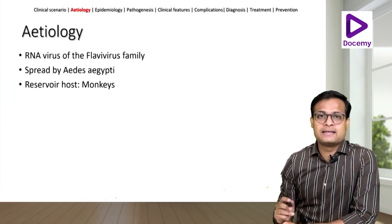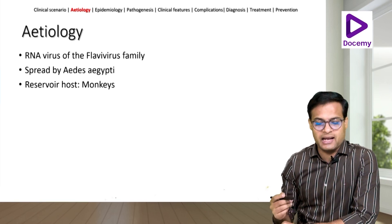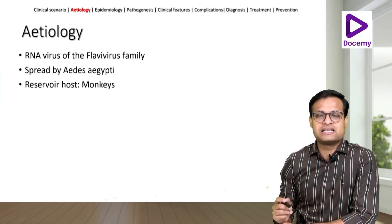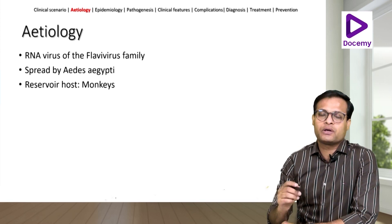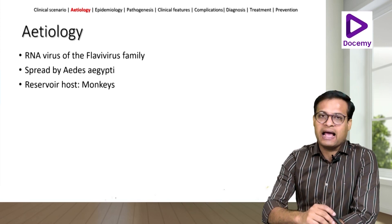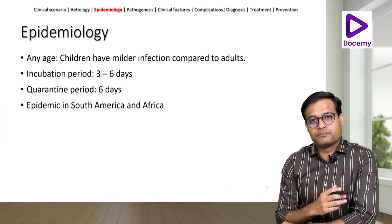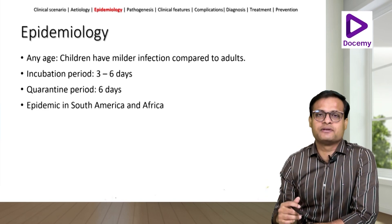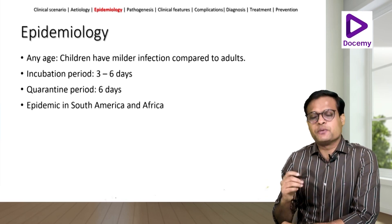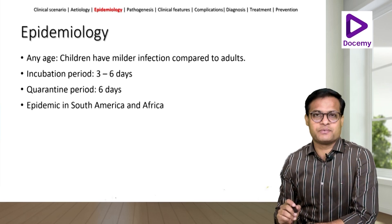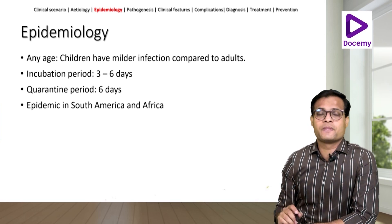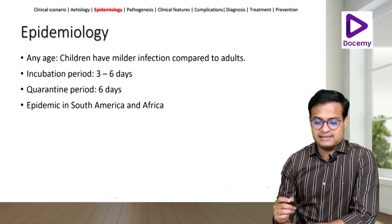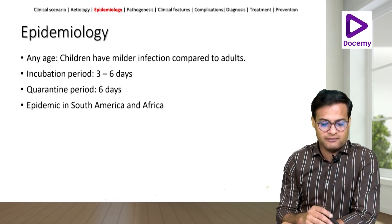Now coming to yellow fever, it is a viral infection caused by an RNA virus of the flavivirus family. It is spread by Aedes aegypti mosquitoes, and the reservoir hosts are monkeys; humans are accidental hosts. It can affect people at any age, and children usually have milder infection when compared to adults. The incubation period is 3 to 6 days, and because of that the quarantine period has been fixed at 6 days. It is epidemic in South America and Africa.